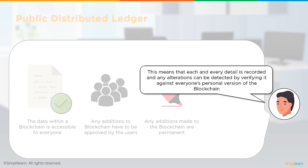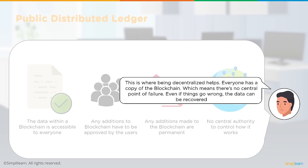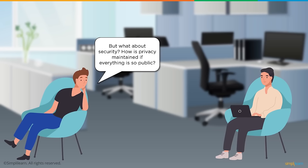Each detail is recorded, and any alteration can be detected by verifying it against everyone's personal version of the blockchain. If someone modifies data on one node, the other ledgers identify the discrepancy and rectify it. There is no central authority controlling the network — it is decentralized. Being decentralized means no central point of failure, and a single source of truth. Even if one node fails, data can be recovered from other nodes.